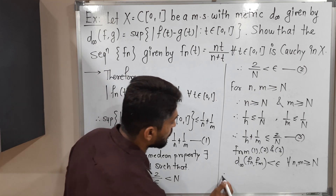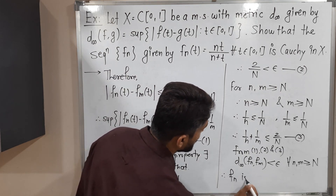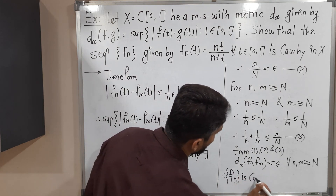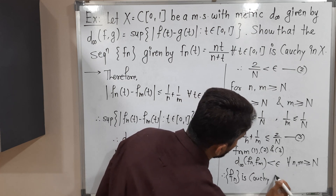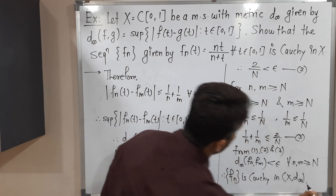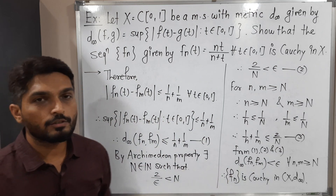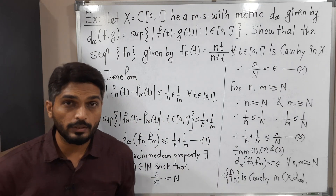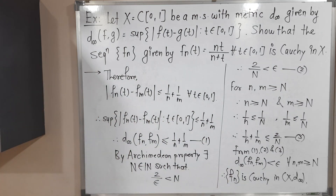Therefore, Fn is Cauchy in the metric space (X, D∞). So we have proved that the given sequence Fn is a Cauchy sequence in the metric space X with metric D∞. We have completed this solution. Make a screenshot of it. Thank you — see you in the next video.